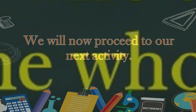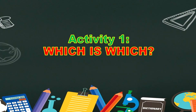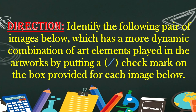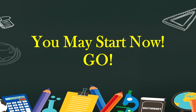We will now proceed to our next activity — Activity 1: Which is Which? Direction: Identify the following pair of images below. Which has a more dynamic combination of art elements played in the artworks? Put a check mark on the box provided for each image below. You may start now. Go!